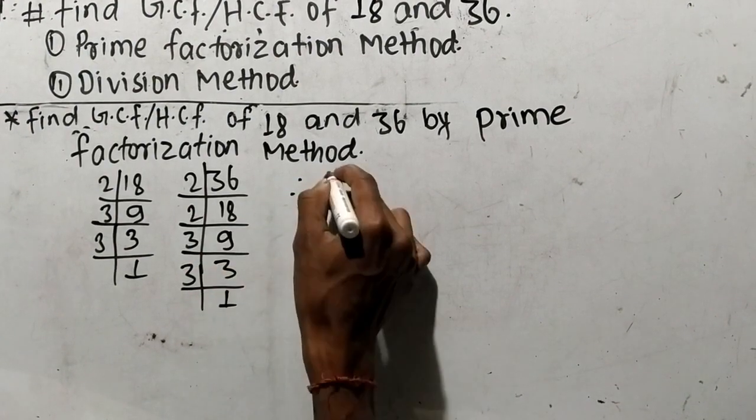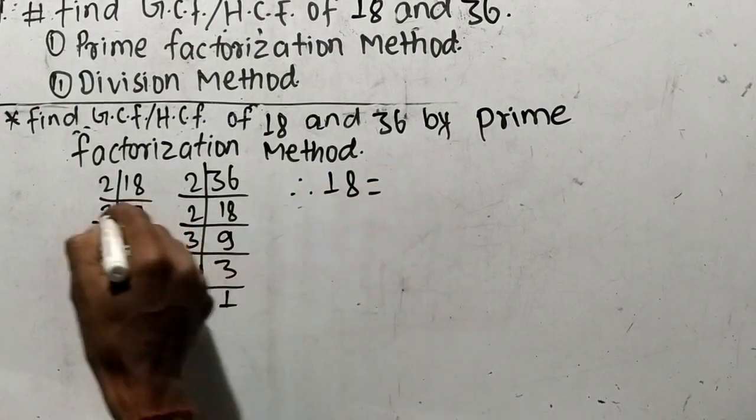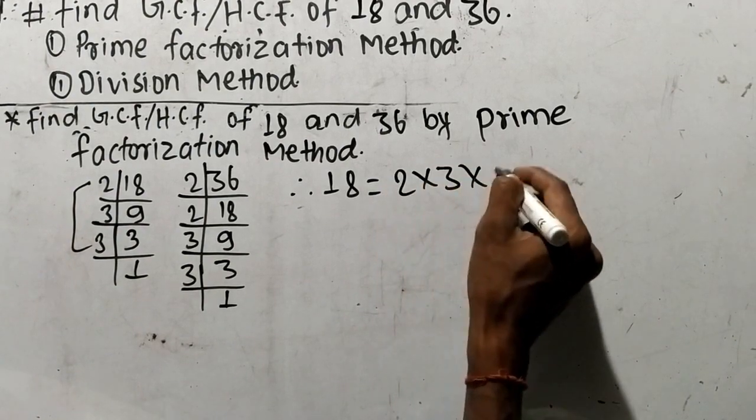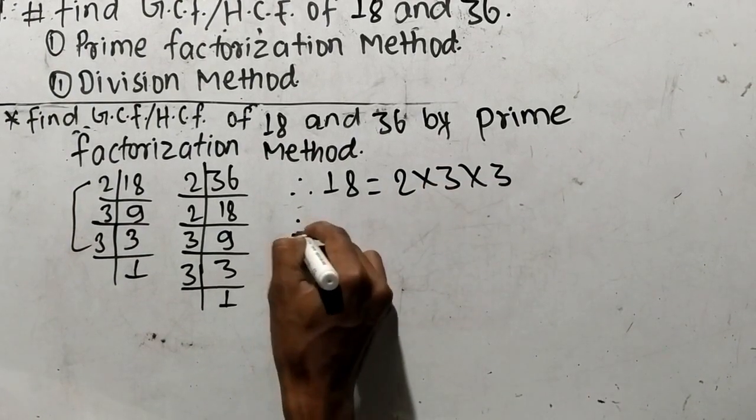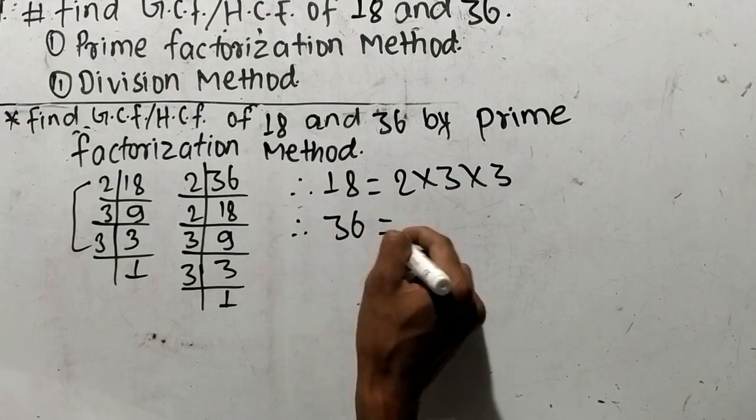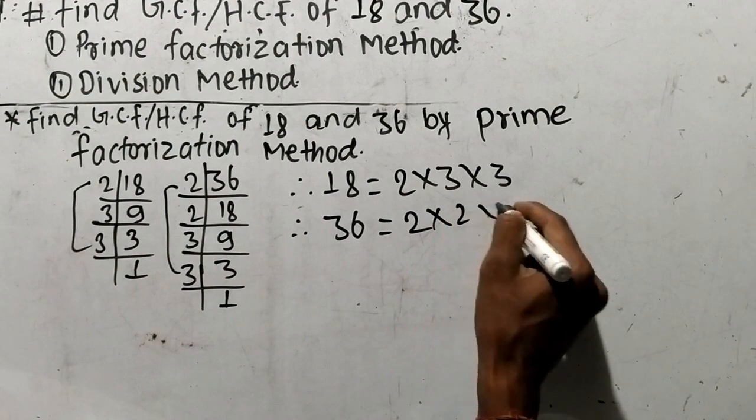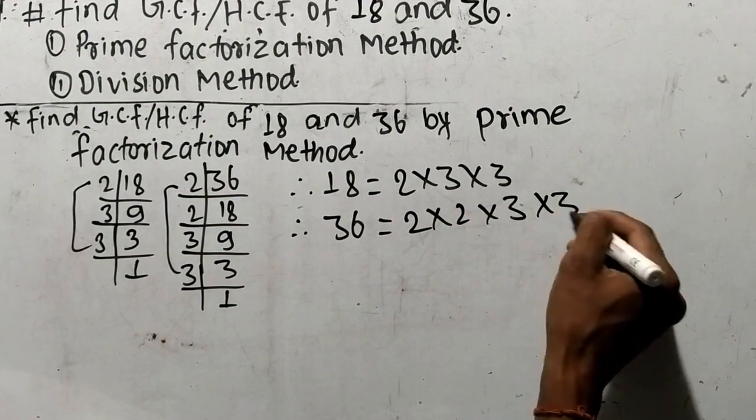From these prime factors, we can write 18 is equal to 2 times 3 times 3. In the same way, we can write 36 is equal to 2 times 2 times 3 times 3.